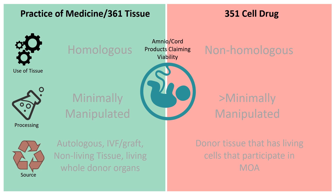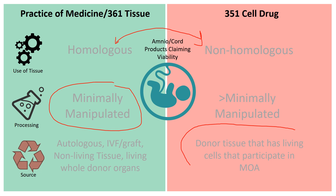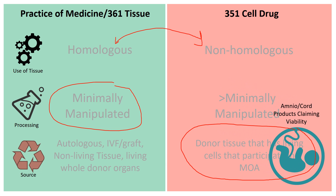Now let's look at amnio and cord blood products that are claiming viability. You could go either way on homologous or non-homologous, based on the concept that the fluid might supply structural support in the body from the donor as well as in the knee. It is minimally manipulated. But if you're claiming viability, it's a donor tissue that has living cells that participate in the mechanism of action. Therefore, it moves to the 351 cell drug side.